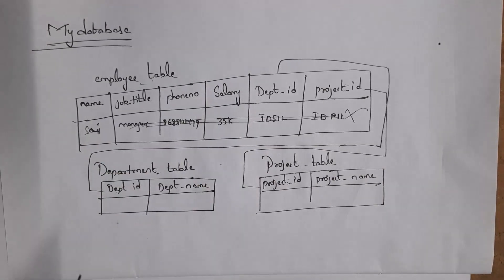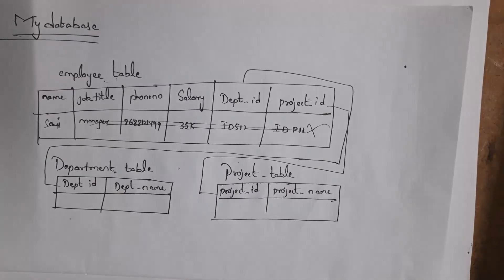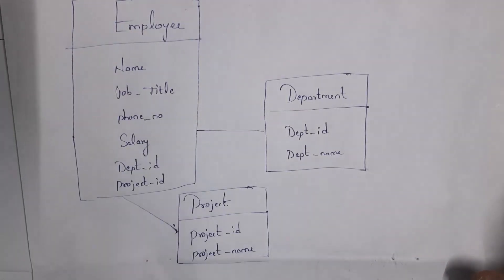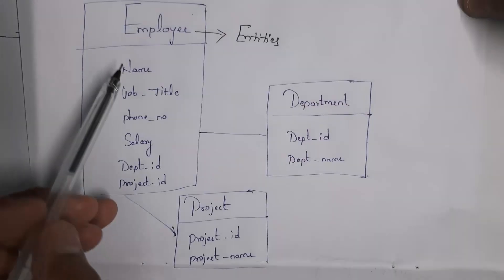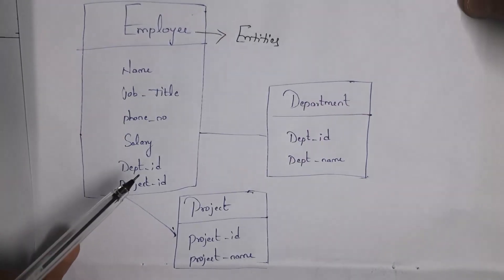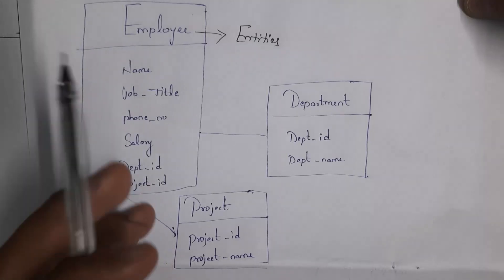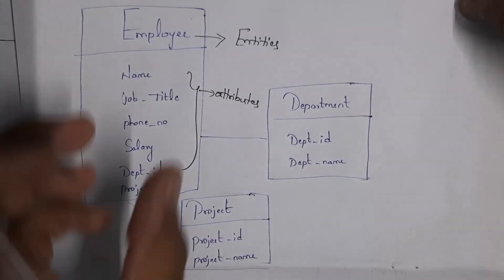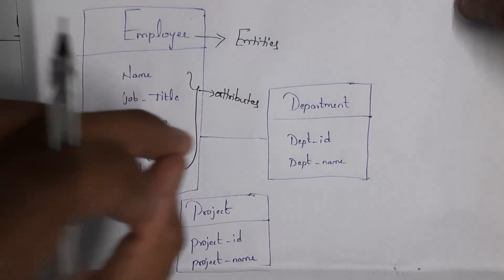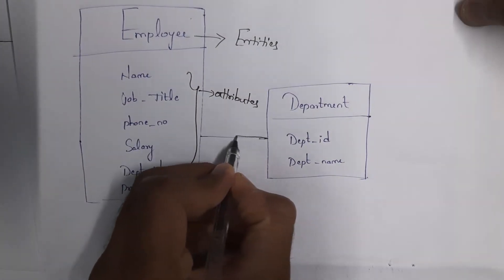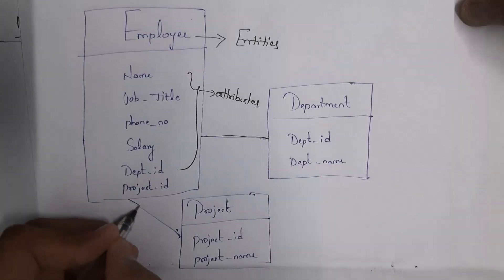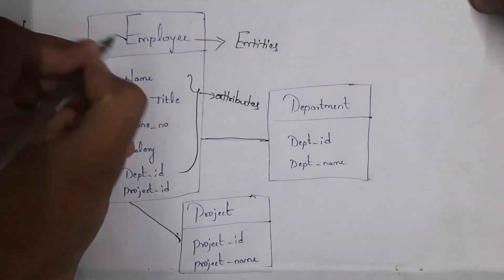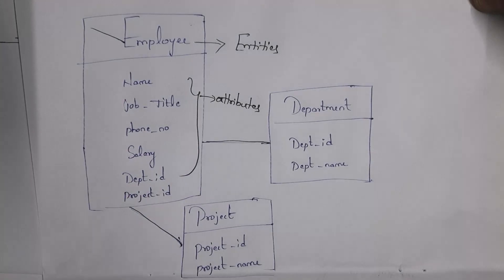We represent this structure by using a schema diagram. This is the schema diagram for this database. In total there are three tables: employee, department, and project. In this diagram, we call the table name as entities, and the column names — name, job title, phone number, salary, department ID, project ID — are called attributes. Attributes are nothing but properties. I am establishing relationships between the employee table and department table, and similarly, between the employee table and project table. This entire schema diagram contains only table names, column names, and relationships between tables.